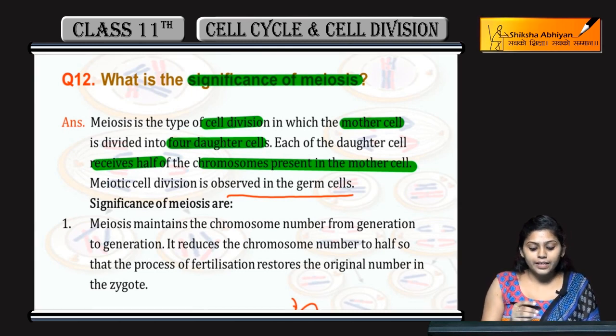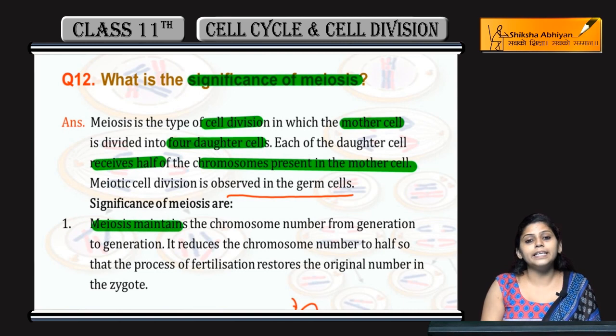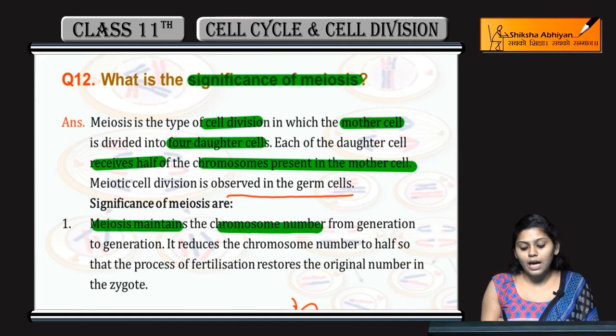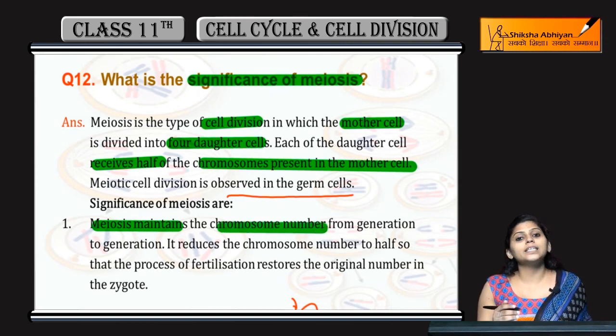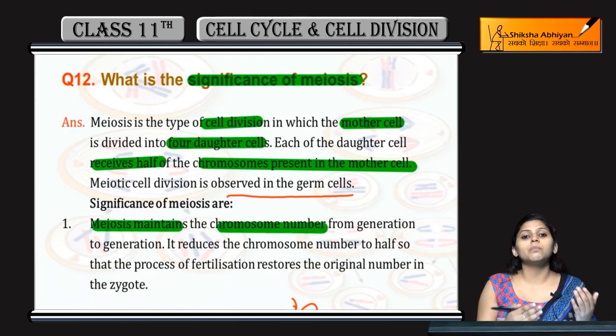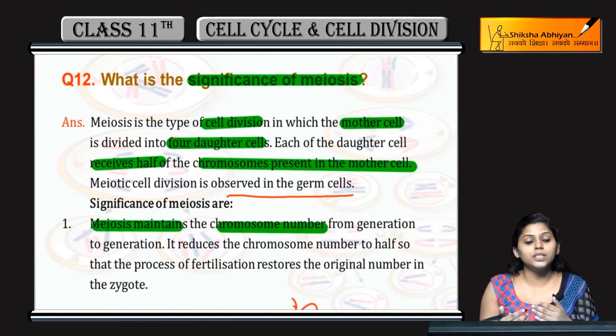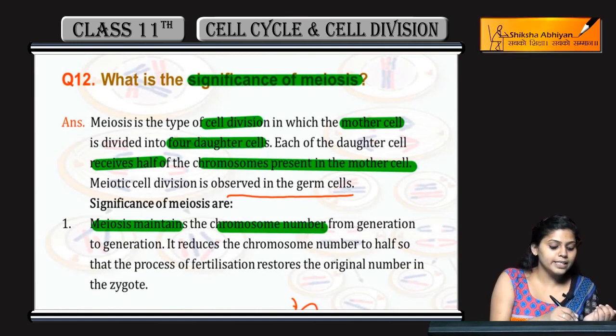What happens in meiosis? Meiosis maintains the chromosome number. If the chromosome number is halved in daughter cells, how does it maintain the chromosome number?